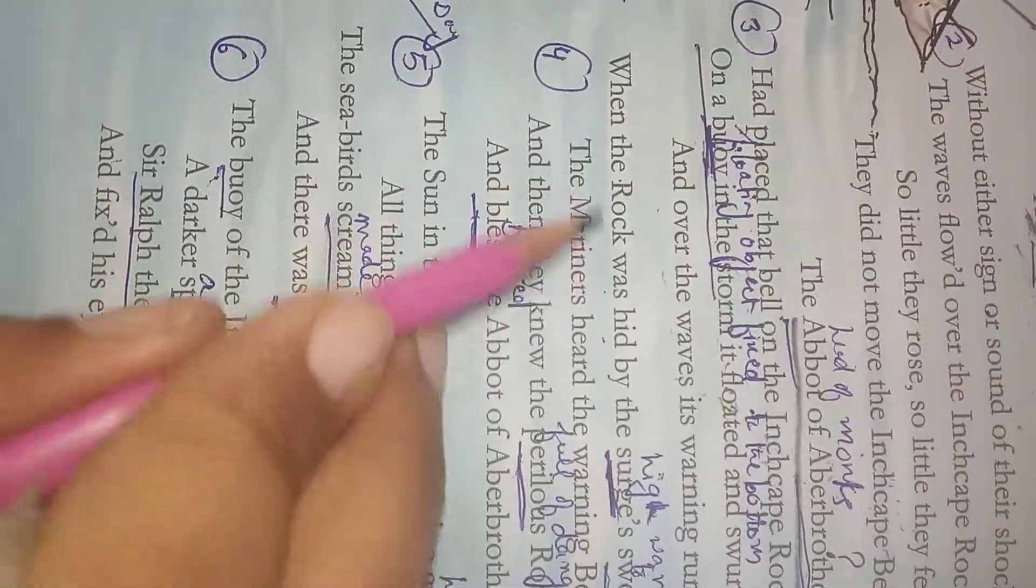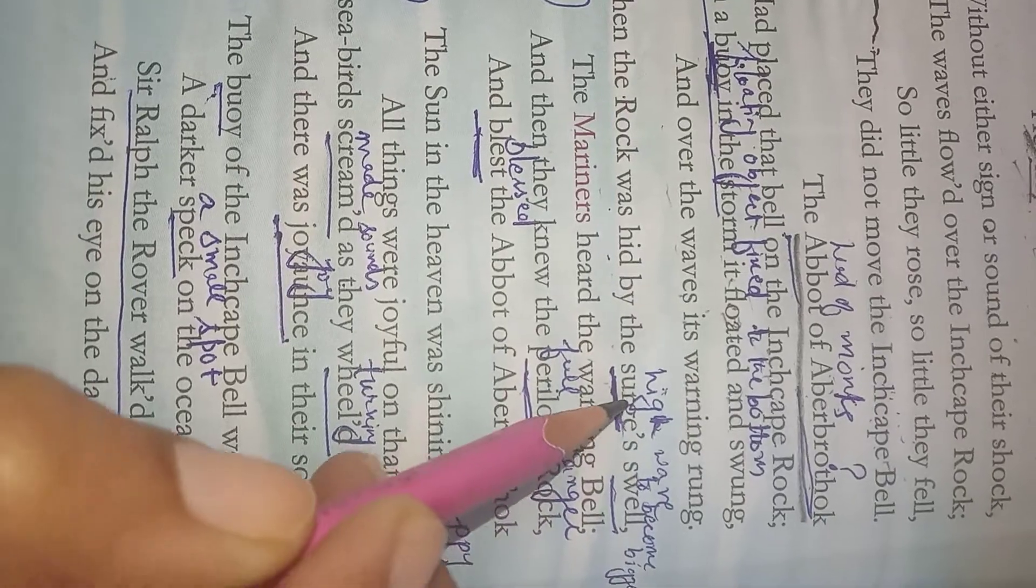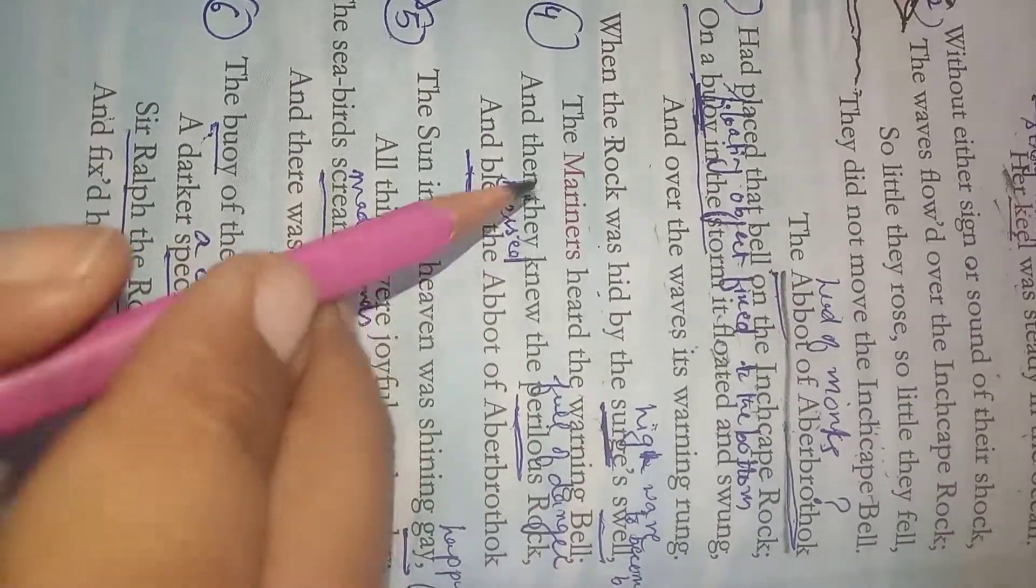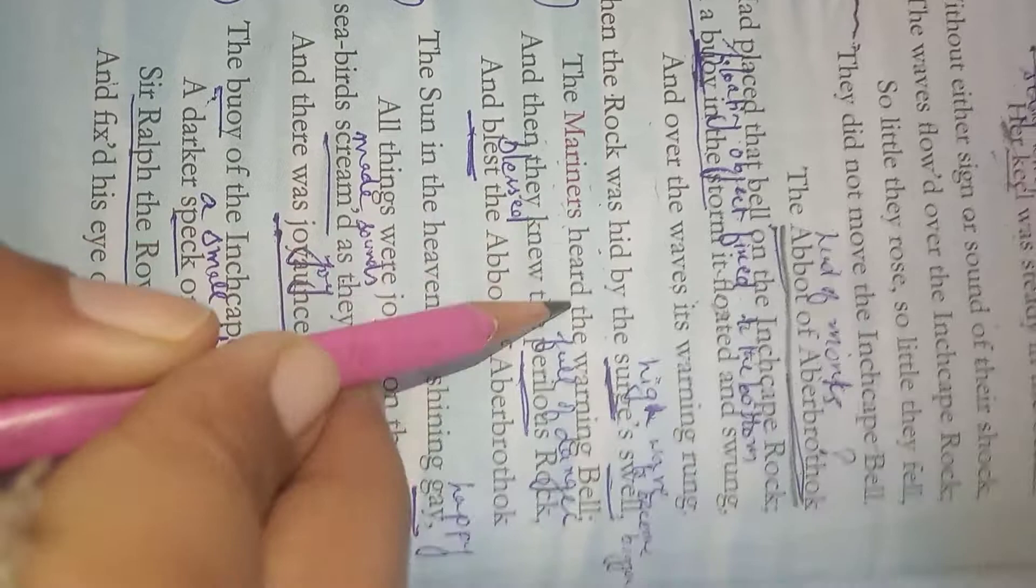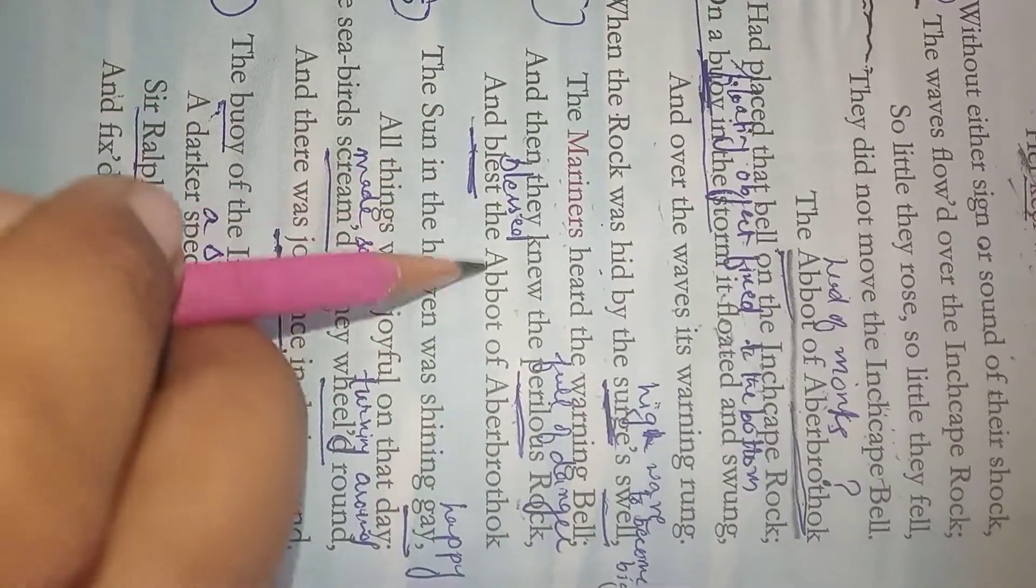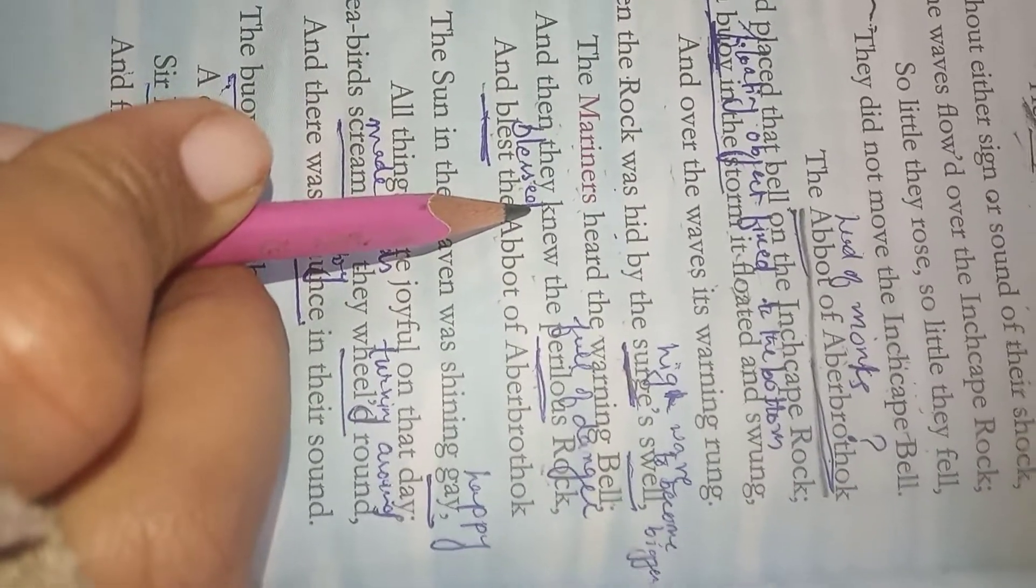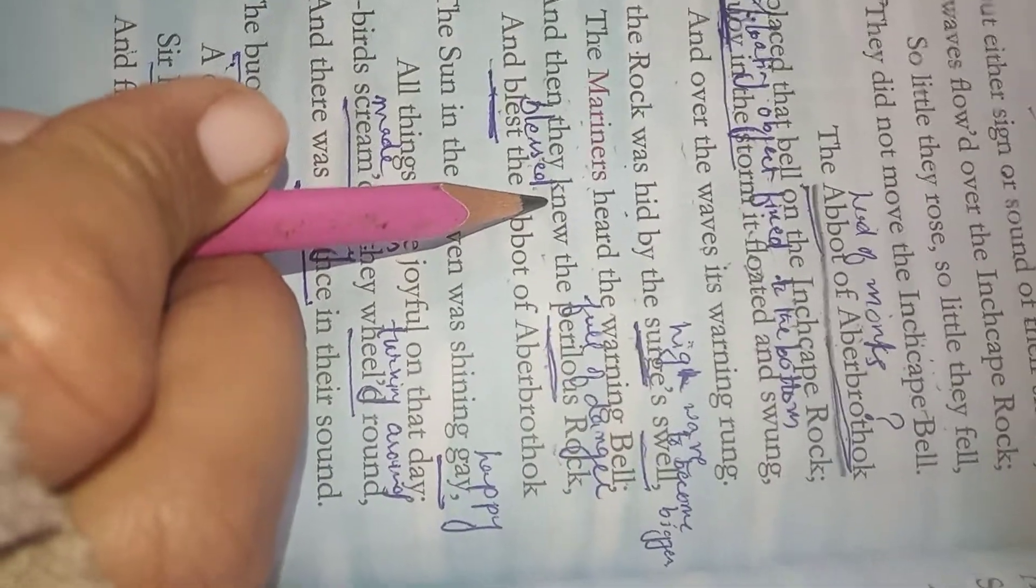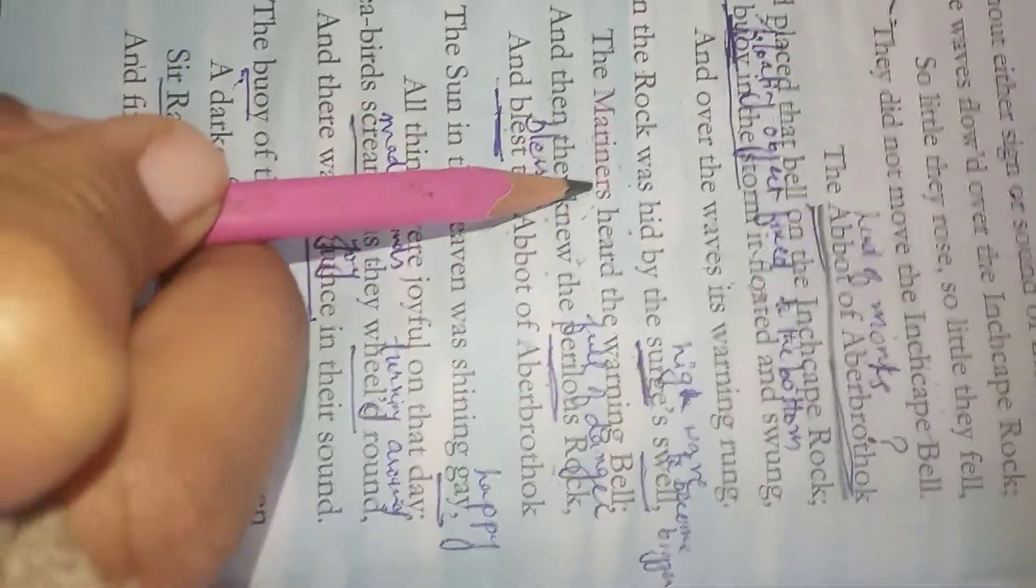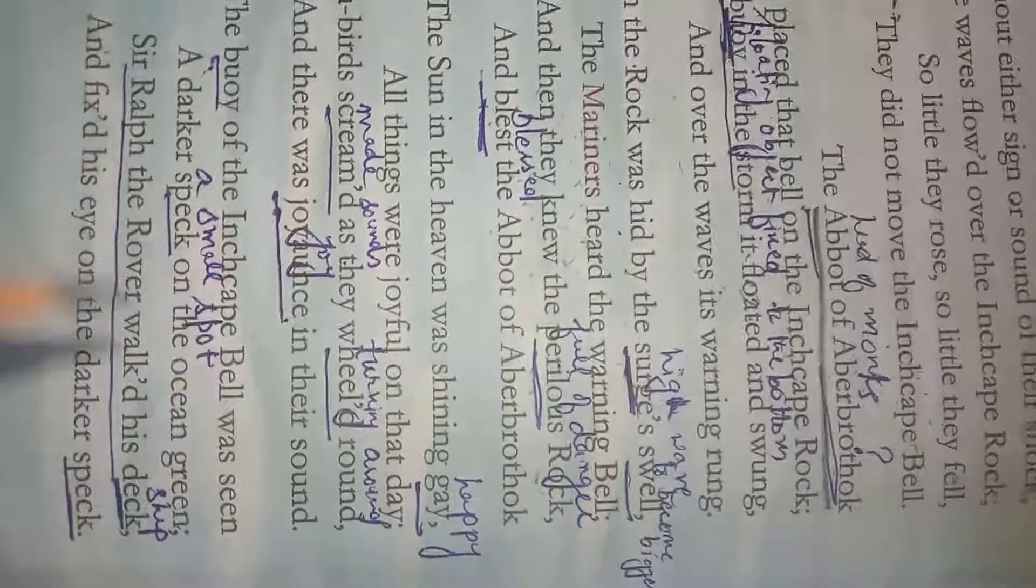When the rock was hit by the surge - surge is a high movement in the ocean - swell means when wave becomes bigger, that means a swell. The mariners - mariners means sailors - heard the warning bell and when they knew the perilous rock - perilous means which is dangerous - and blessed the Abbot of Aberbrothok. So whenever there were high waves, the rock was hidden by the waves, the bell used to ring and the sailors heard the bell. They knew there was a rock, so they were safe. The mariners were safe by listening the warning of the bell and as a result they blessed Abbot of Aberbrothok.